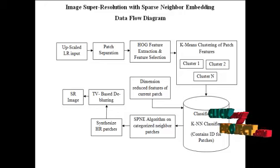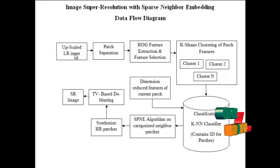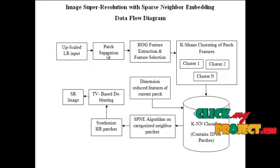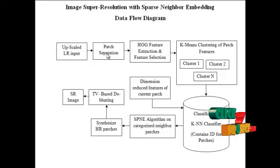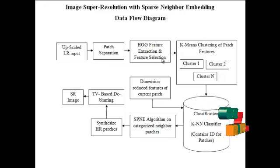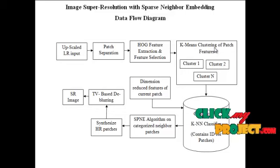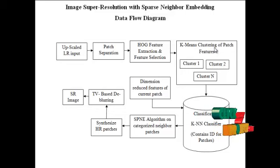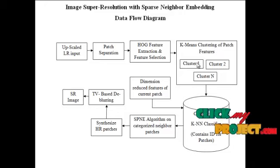This is the data flow diagram. First, we consider the upscaled LR input, which will be converted into patches. The patch size considered here is a 10 by 10 matrix. Each patch will be subjected to HOG feature extraction. Those features will be subjected to a feature selection algorithm, and only the selected features will pass through the K-means clustering algorithm, which will subdivide each patch into one of the clusters.